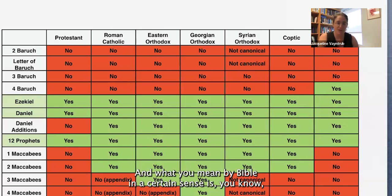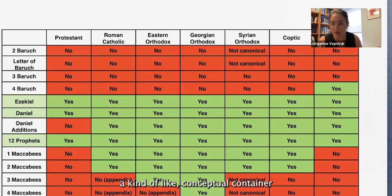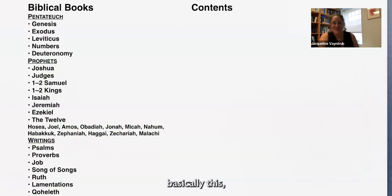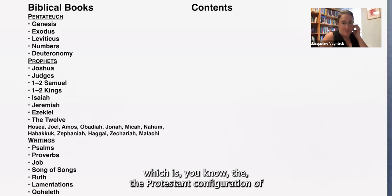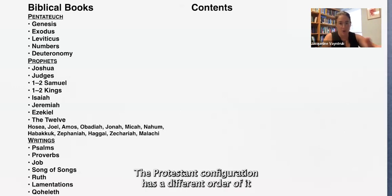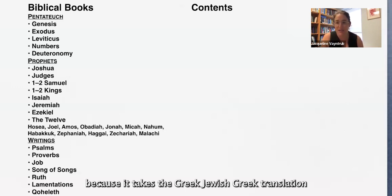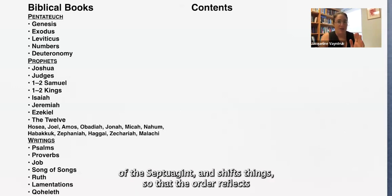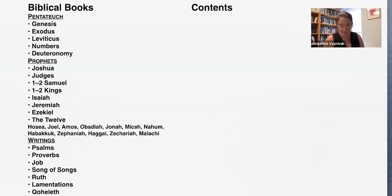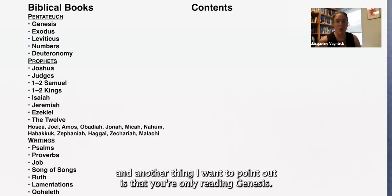That is a way of defamiliarizing what you mean by 'Bible.' The Protestant configuration takes a different order from the Jewish configuration of the Hebrew Bible, because it takes the Greek Jewish translation, the Septuagint, and shifts things so the order reflects a specific idea those translators had of authorship. And another thing to point out: you're only reading Genesis — that part right there.